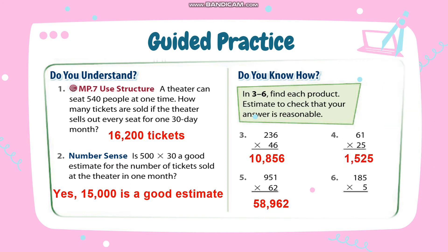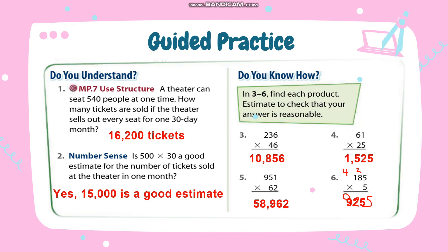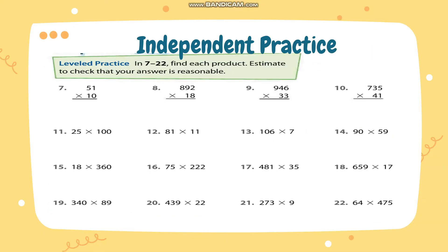For number 6: 5 times 5 is 25, regroup 2. 8 times 5 is 40, plus 2 is 42, write 2 and regroup 4. 5 times 1 is 5, plus 4 is 9. So the answer is 925. Now it's your turn — pause the video and answer the following.